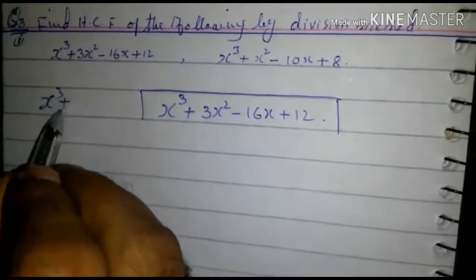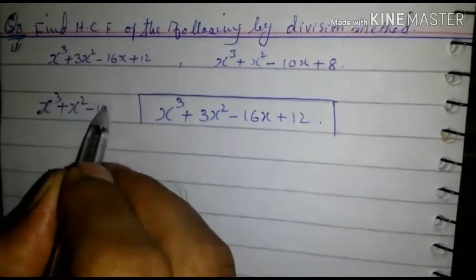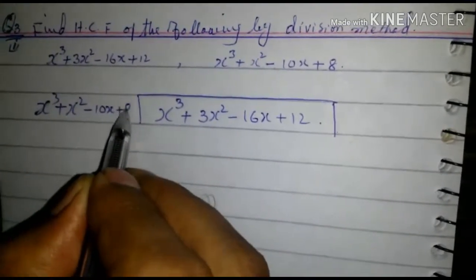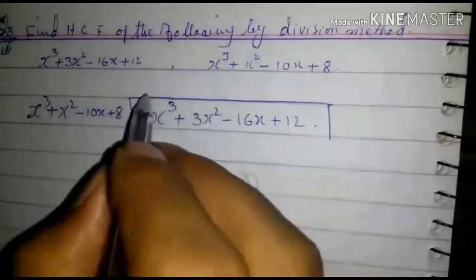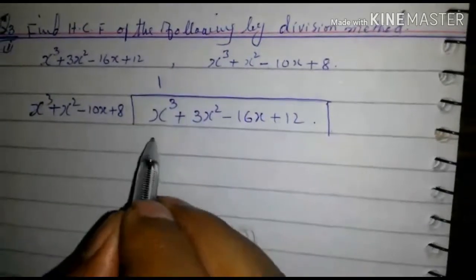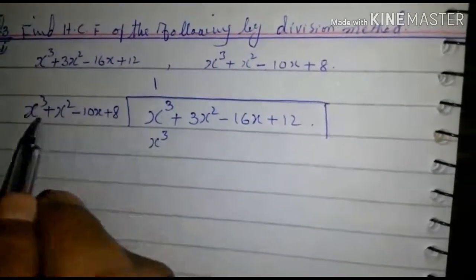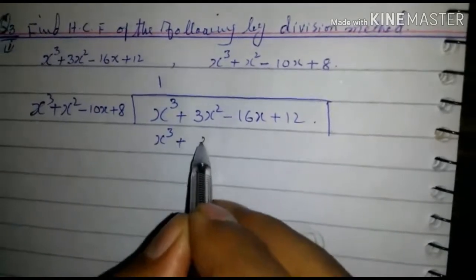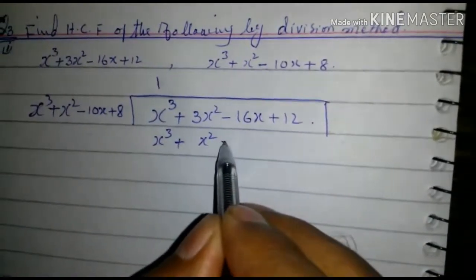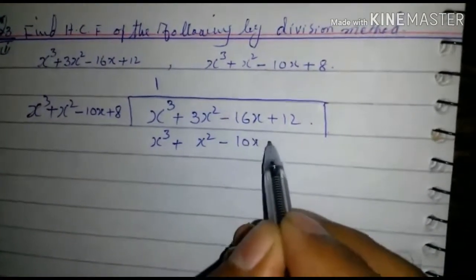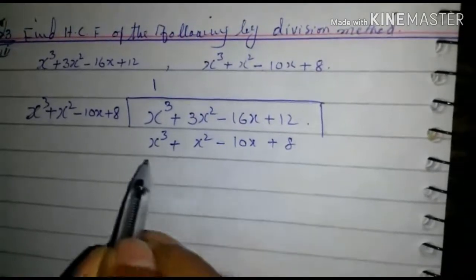x³ + x² - 10x + 8. 1 times x³ + x² - 10x + 8.